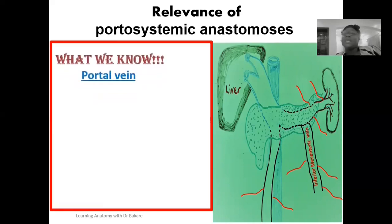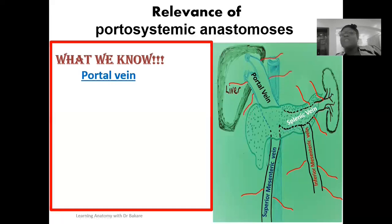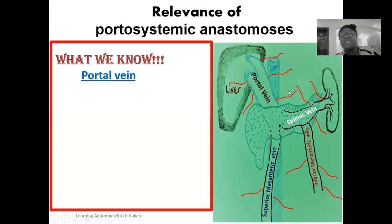We know that the portal vein is formed by the union of the splenic vein and also the superior mesenteric vein. These two veins are the major tributaries of the portal vein and they unite to form it. The portal vein also receives minor tributaries from other veins around the gastrointestinal tract and organs located around that region, draining deoxygenated but nutrient-rich blood into it.